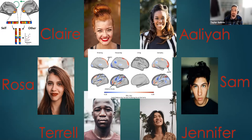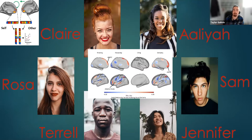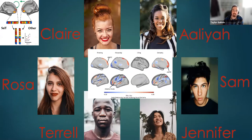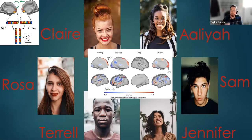I wanted to know whether it mattered who the other person was or what the social relationships were in these small groups. In this small social network, does it matter that Terrell feels very similar to Aaliyah, or that Rosa and Claire are really good friends? Does it matter that Sam and Jennifer know each other really well? We brought 20 groups into the lab — co-worker groups, friend groups, academic groups — and one at a time we scanned each person's brain while they were thinking about who they were or thinking about who one of the other group members was.